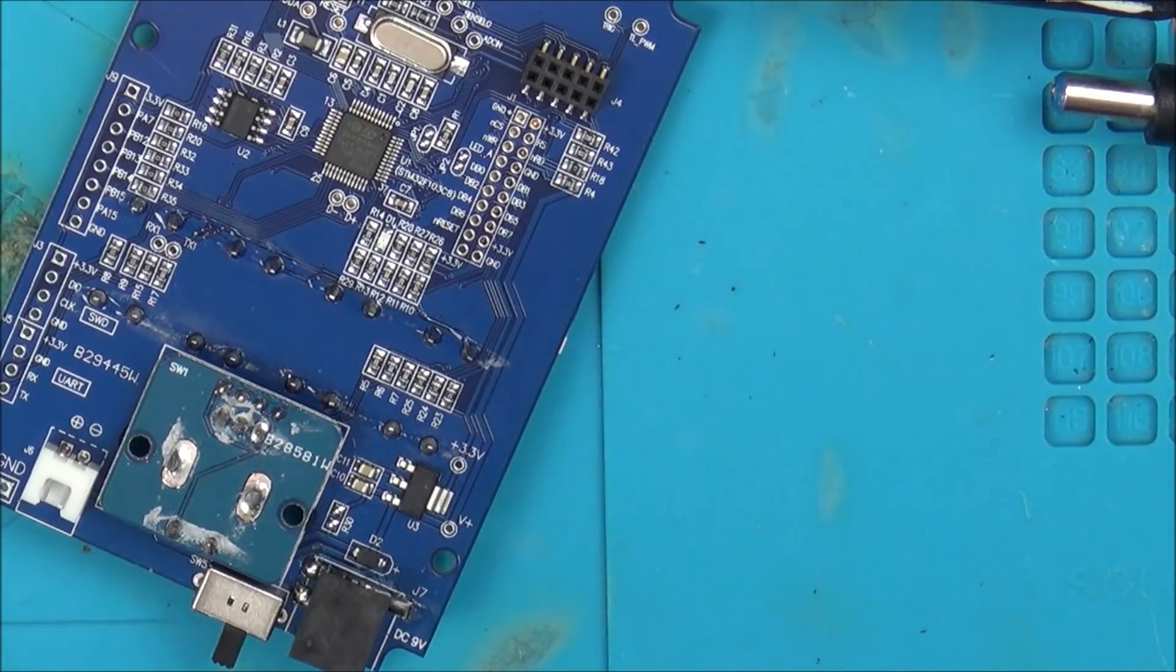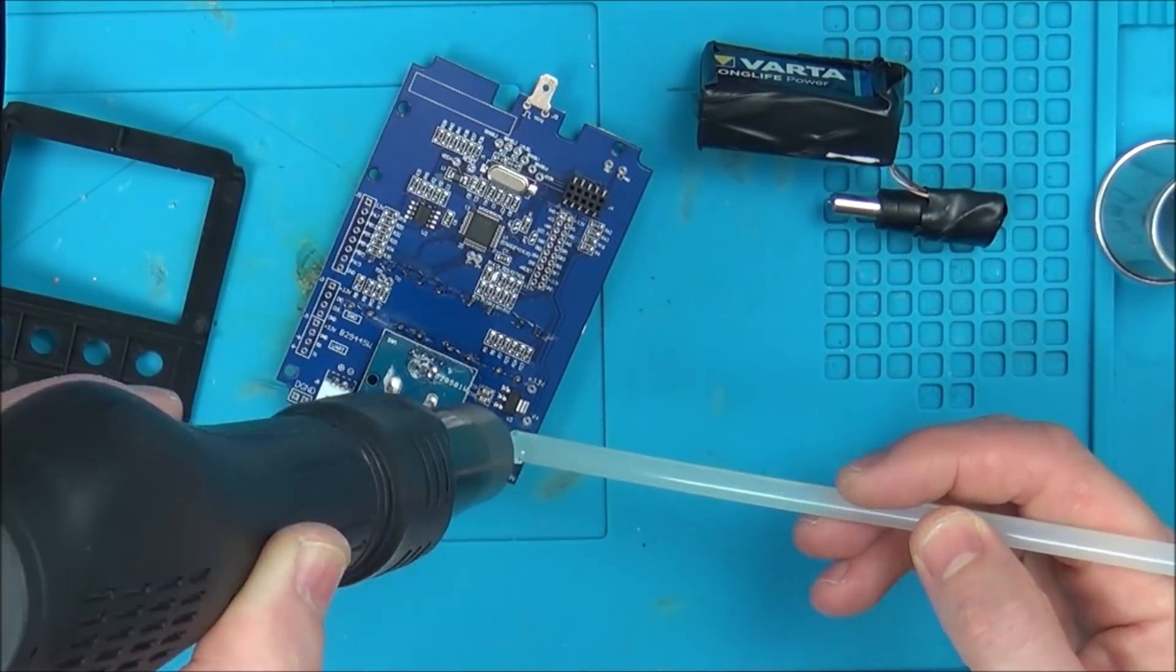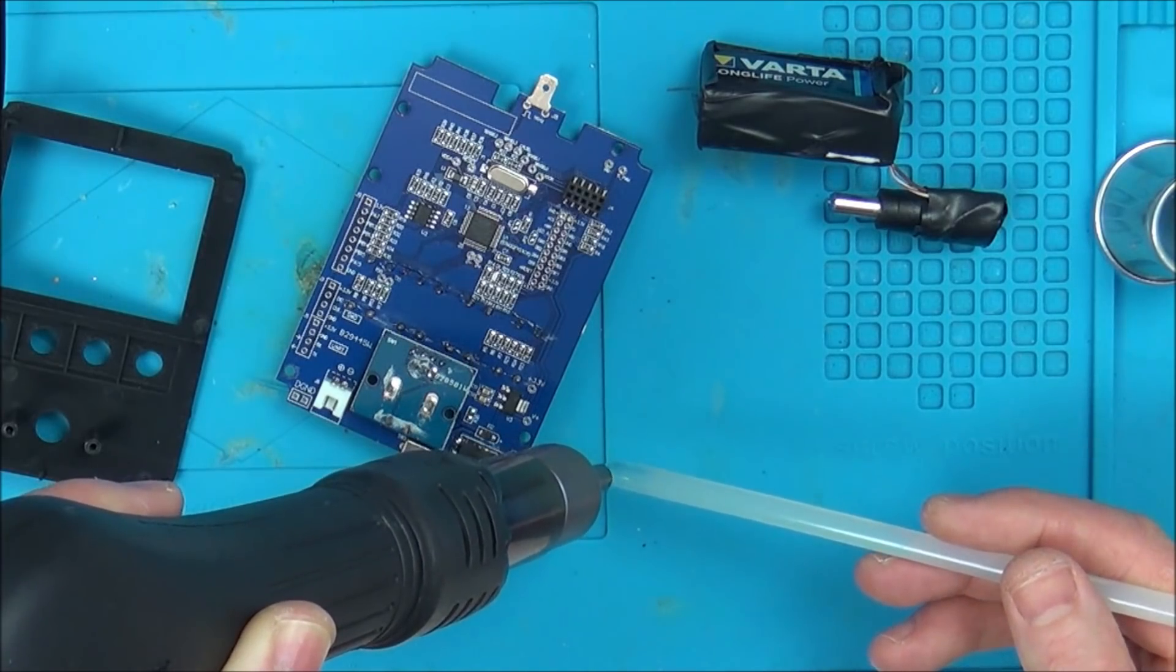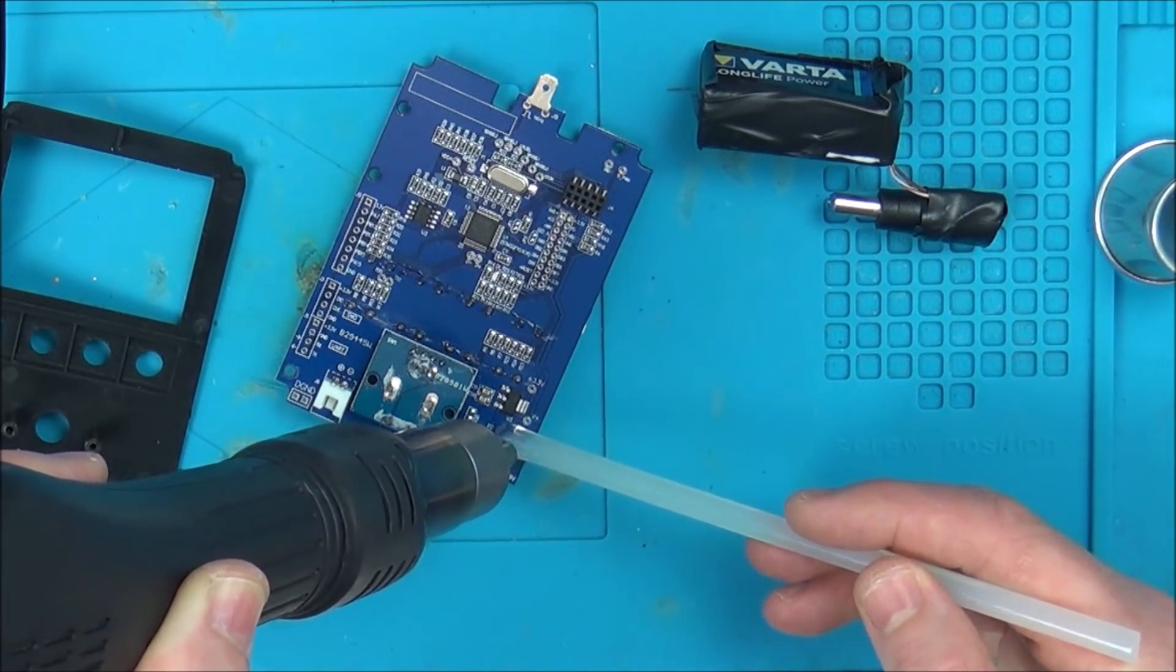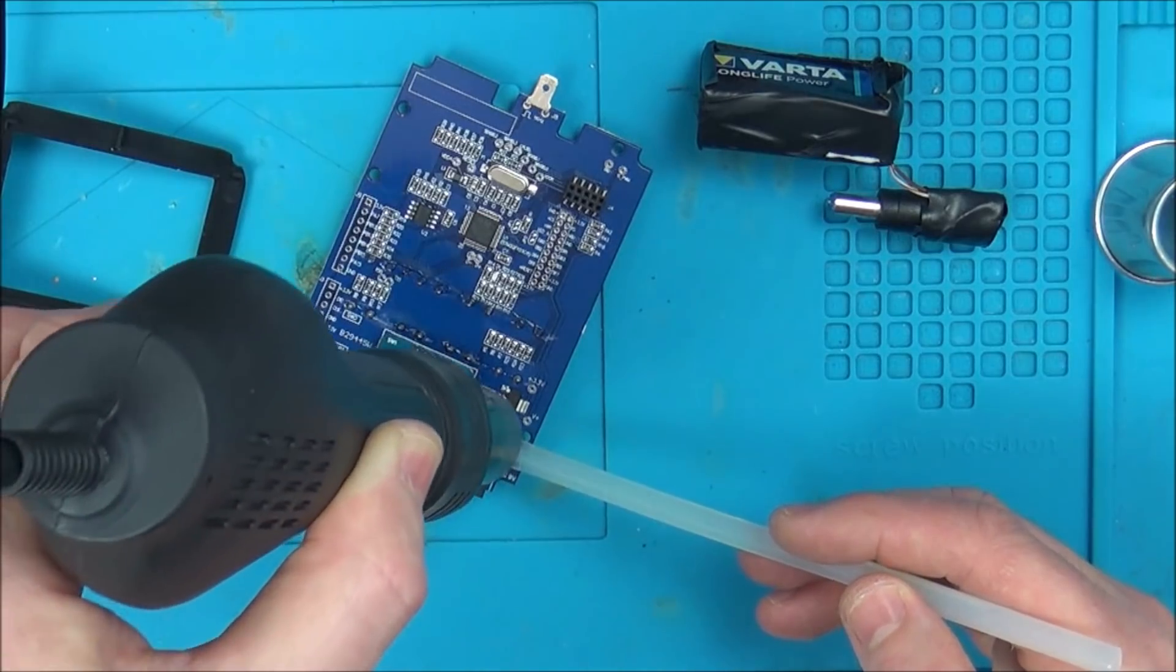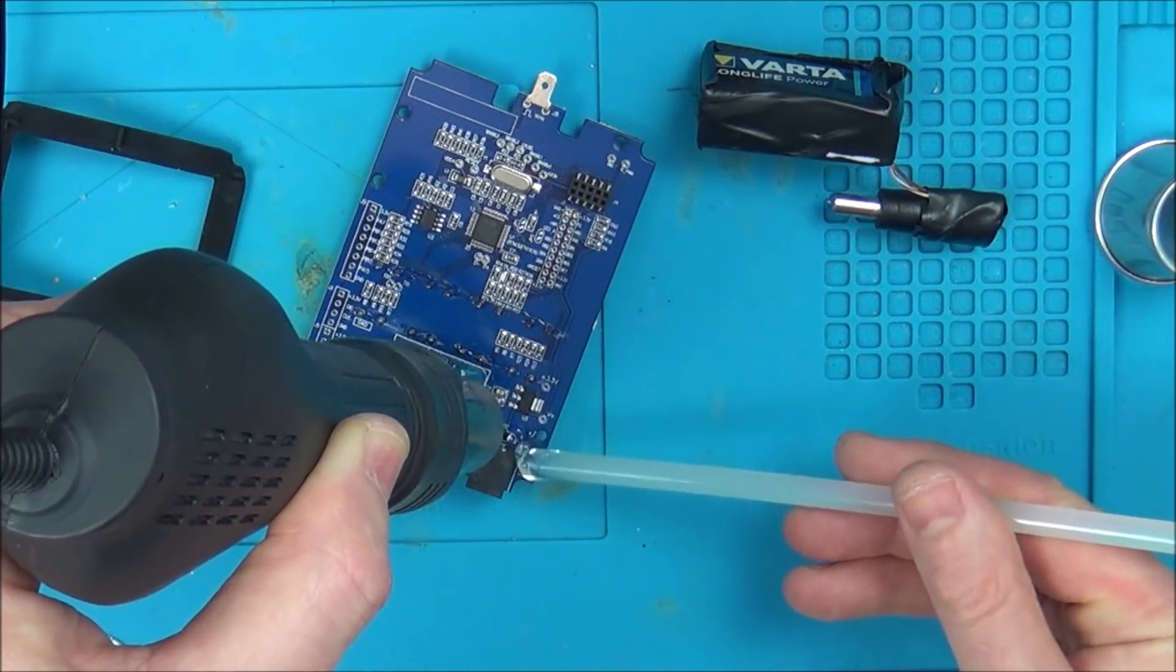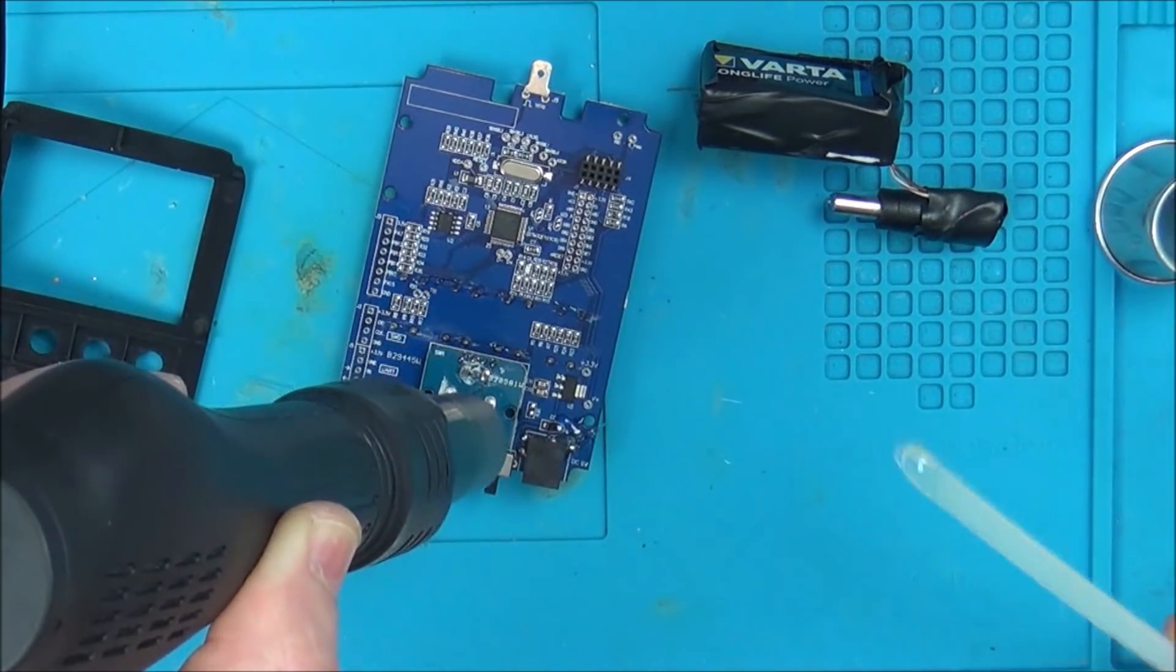Right, starting to melt now. Just put it all along there, the back part. Then it's not going to interfere with anything else. There we go.